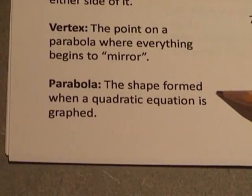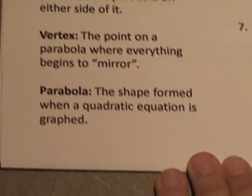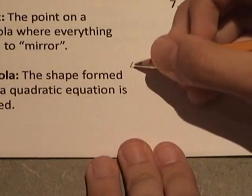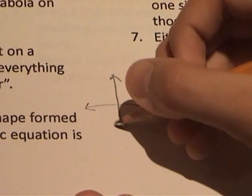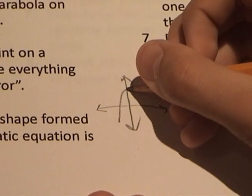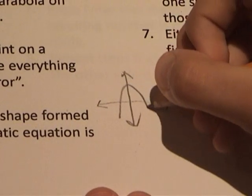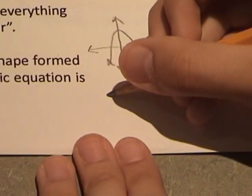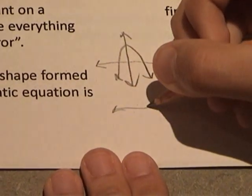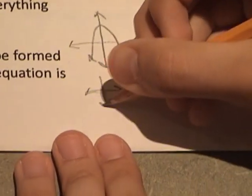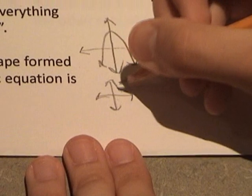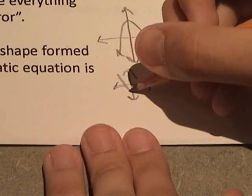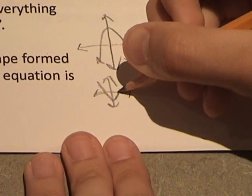A parabola is the shape formed when a quadratic equation is graphed. Parabolas will either slowly go up, peak at the vertex, and then go down, or they will slowly go down, peak at the vertex, and then go up.